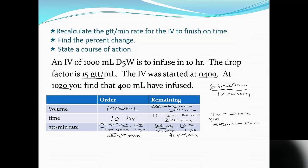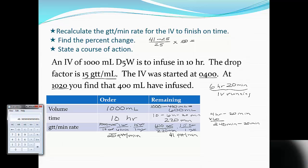Next, it asks us to find the percent change. The formula is: new minus old, divided by old, times 100. The new rate is 41, the old rate is 25. So: 41 minus 25 equals 16; divided by 25; times 100. Intuitively it looks like it'll be more than the 25% allowed — and doing the math confirms it: this is a 64% change.